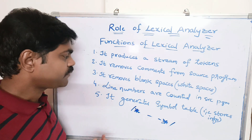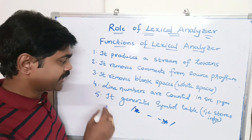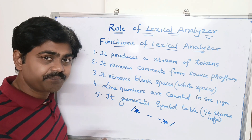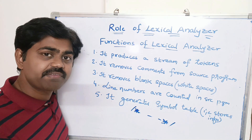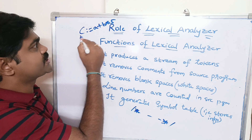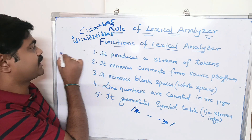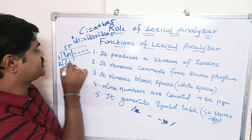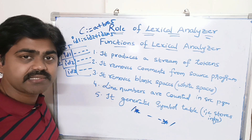Line numbers are counted in the source program. For example, if a program is a hundred lines of code, line numbers are counted so that errors can be reported at specific lines — such as 'line 10: a semicolon is missing.' The last function is that the lexical analyzer generates a symbol table. For example, for the expression c = a + b * 5, identifiers like c, a, and b are stored as ID1, ID2, ID3 in the symbol table, with all their information maintained.